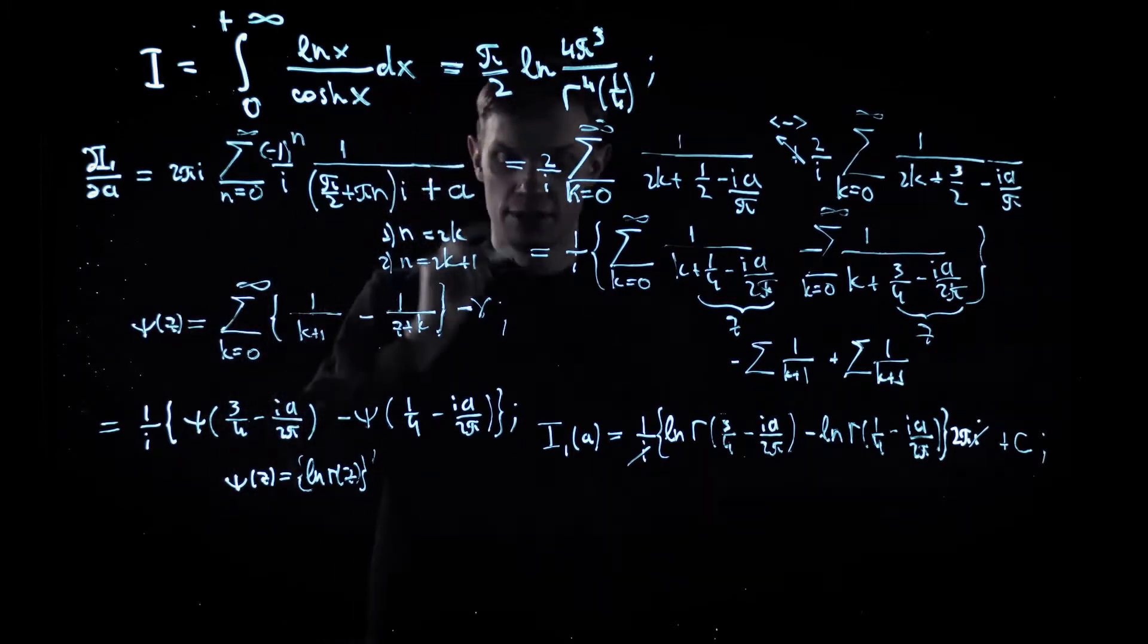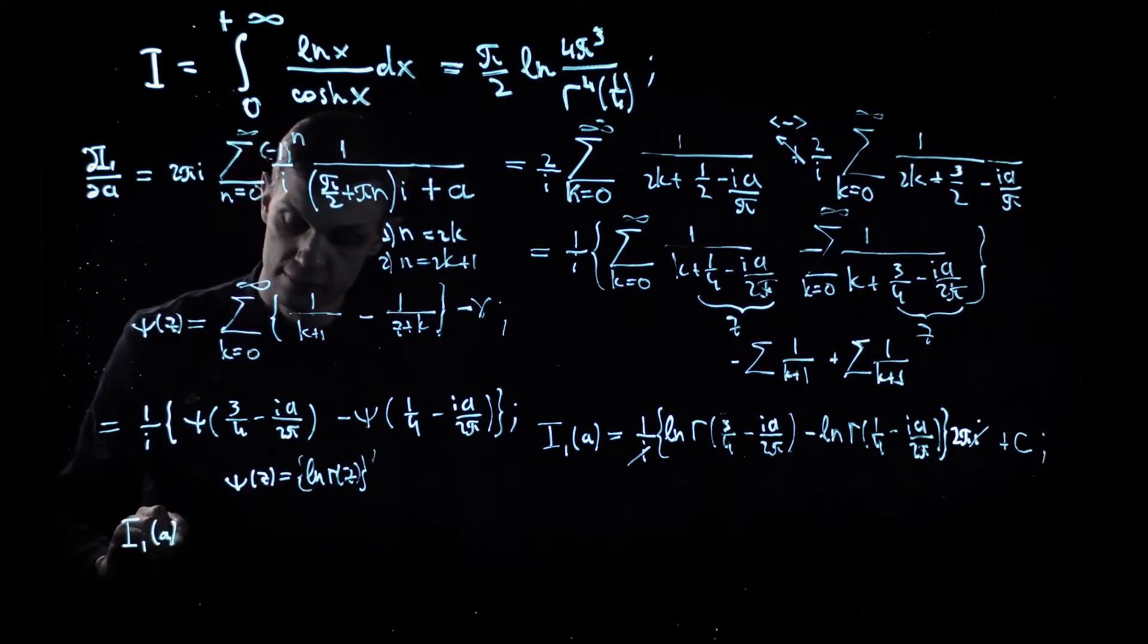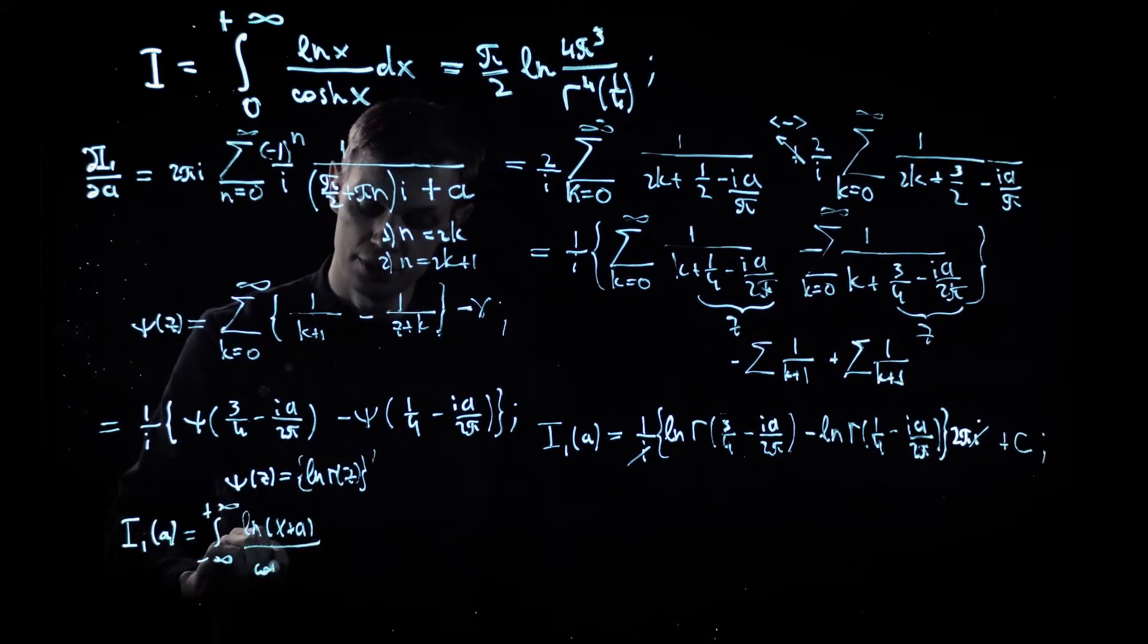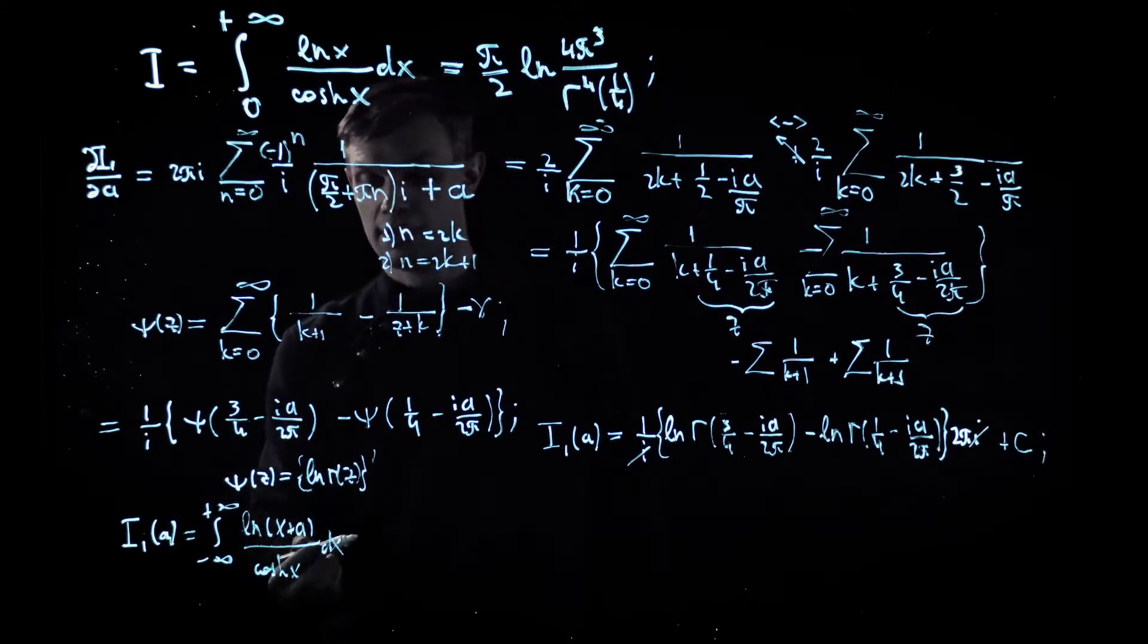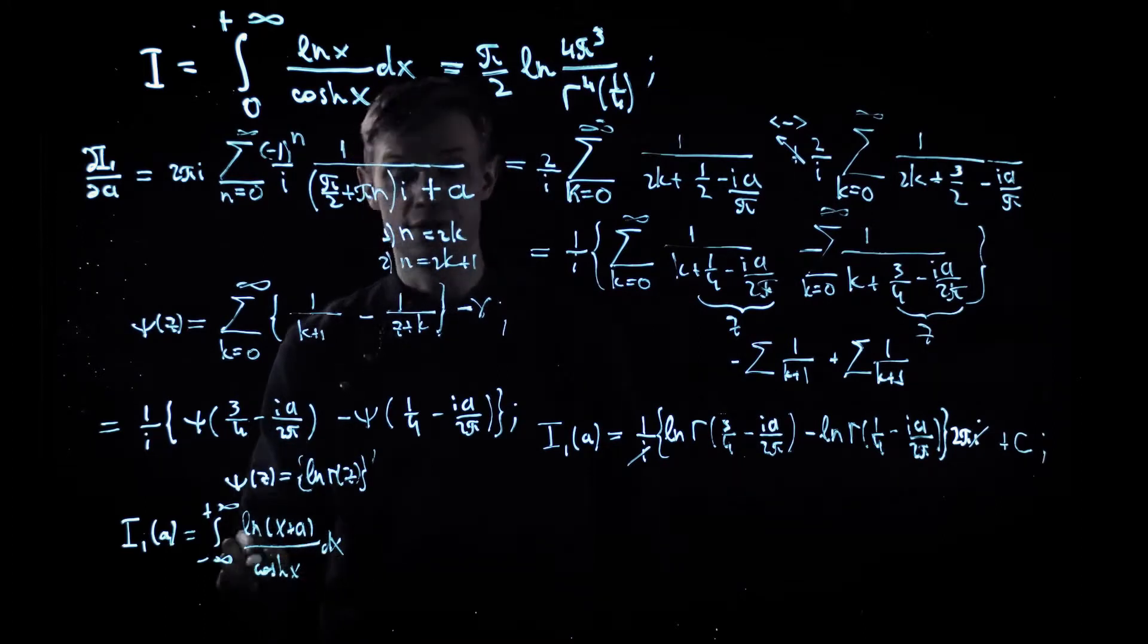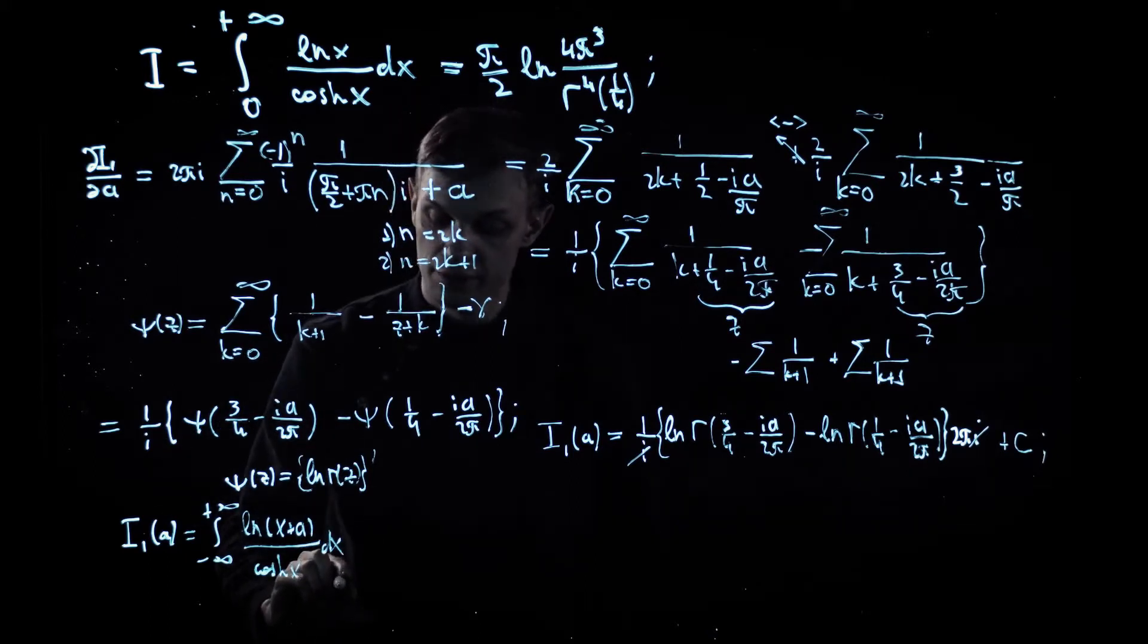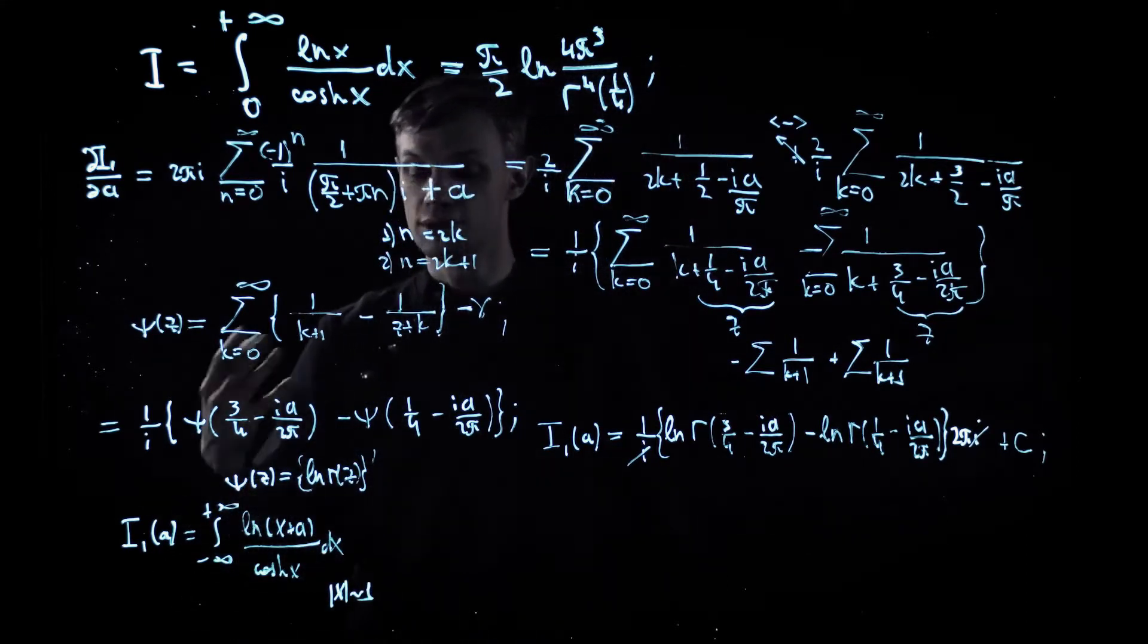So let's write down again the expression for the original integral I_1. I_1 was defined as the log of x plus a divided by the corresponding cosine hyperbolic of x. It's easy to see that the important regions of convergence of this integral are defined by the behavior of the denominator, because the denominator contains exponential functions and exponential functions decay or on the contrary rise for x of the order of one. So the important region of integration for this integral, where the integral accumulates its value, is x in the segment from minus one to one.